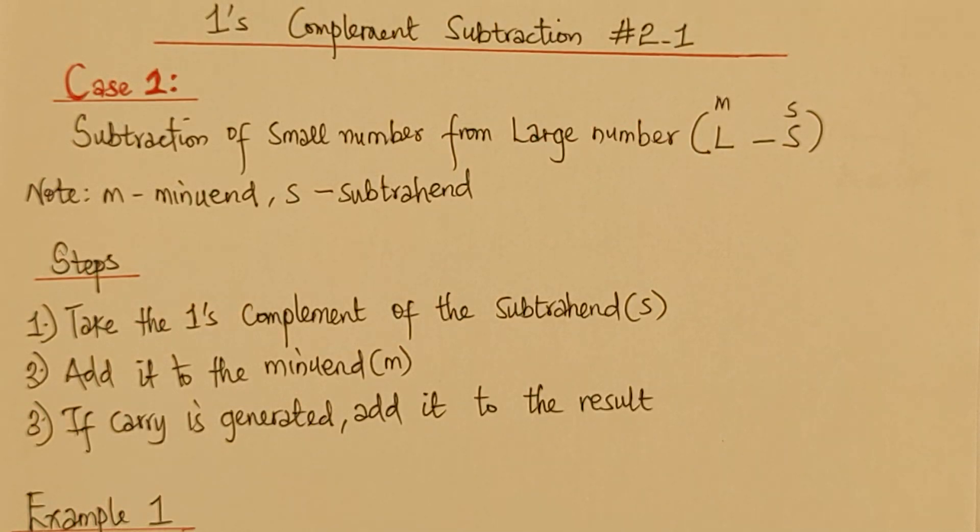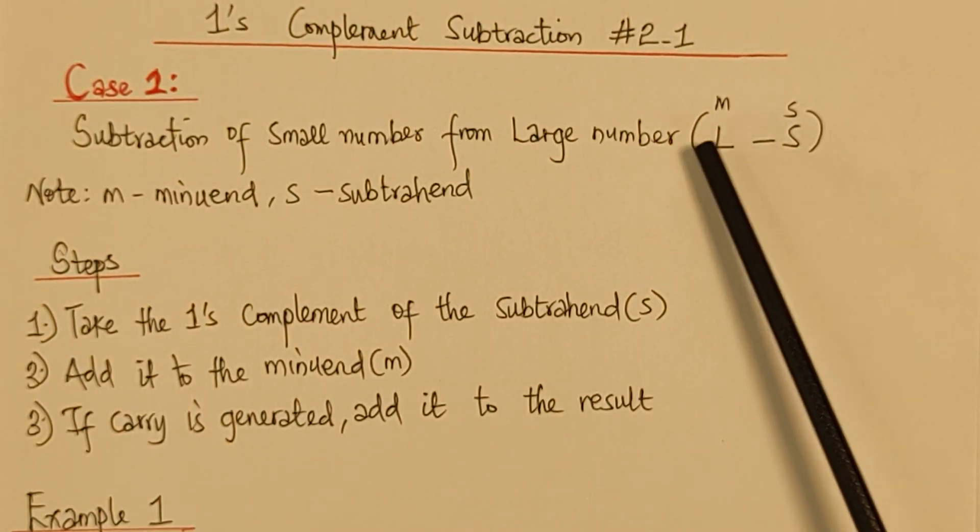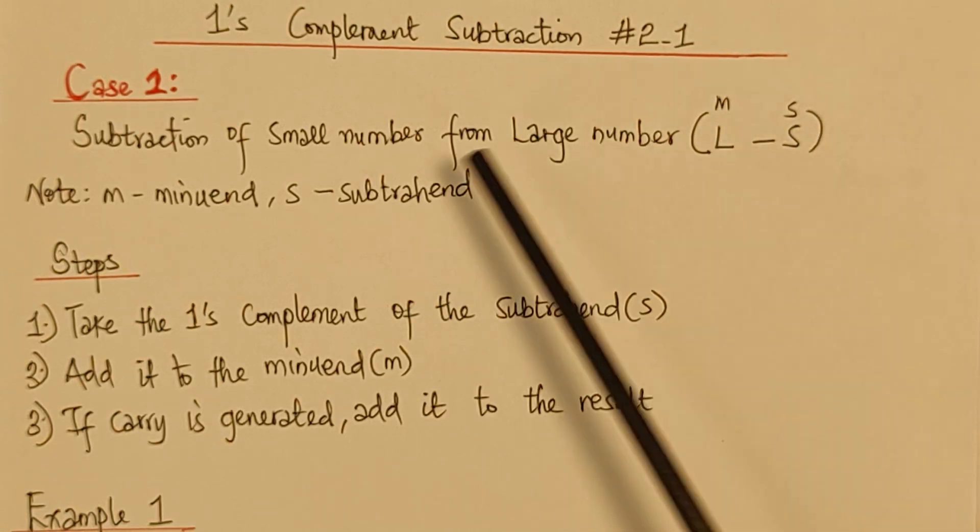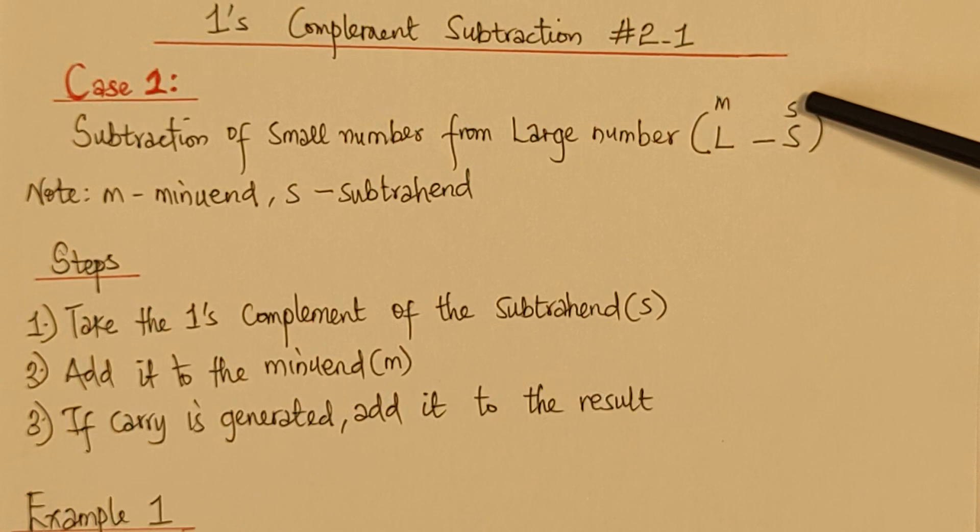Now, for the given case two, where we have to subtract small number from large number. First, I just denote this as L, which is the large, and then S, which is the small. We need to understand that for this, we call it the subtrahend, and this we call it the minuend.